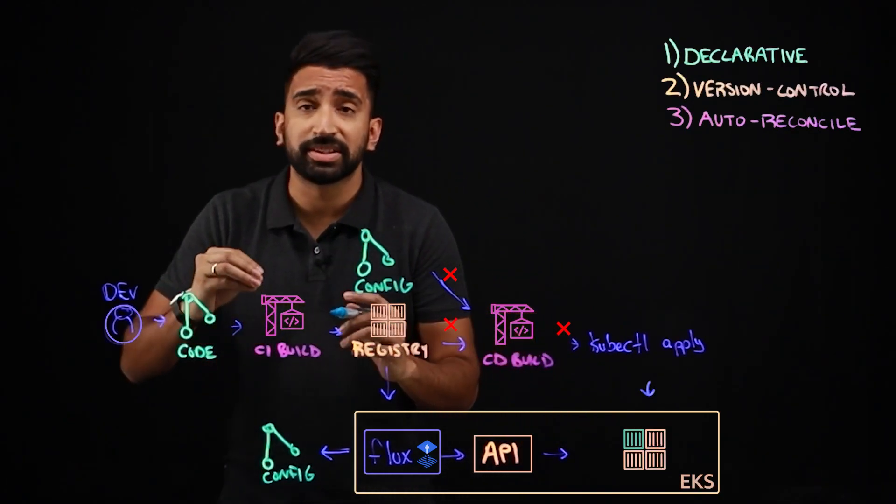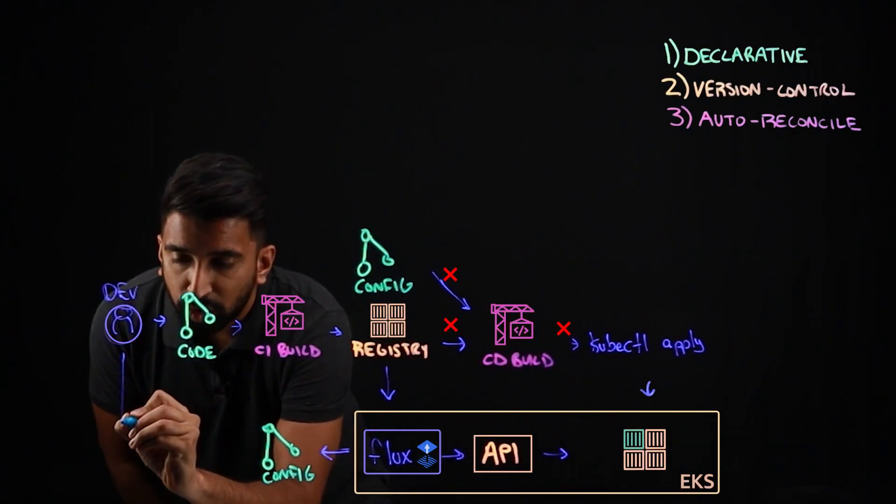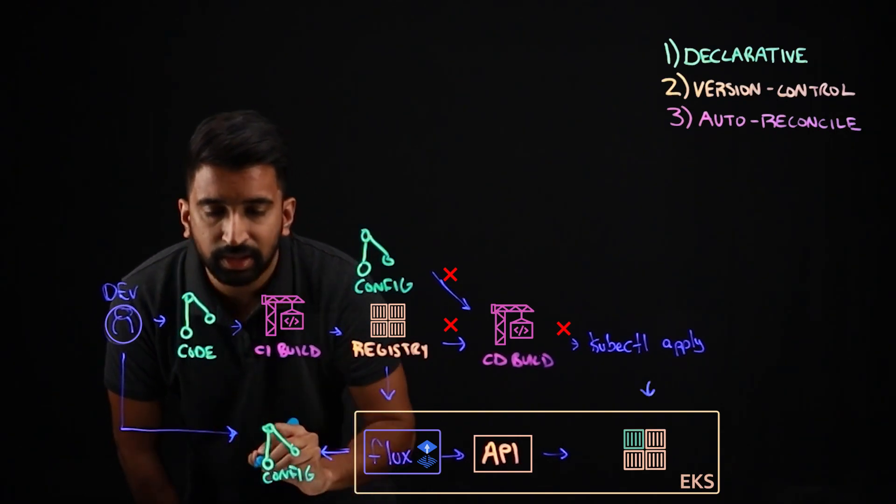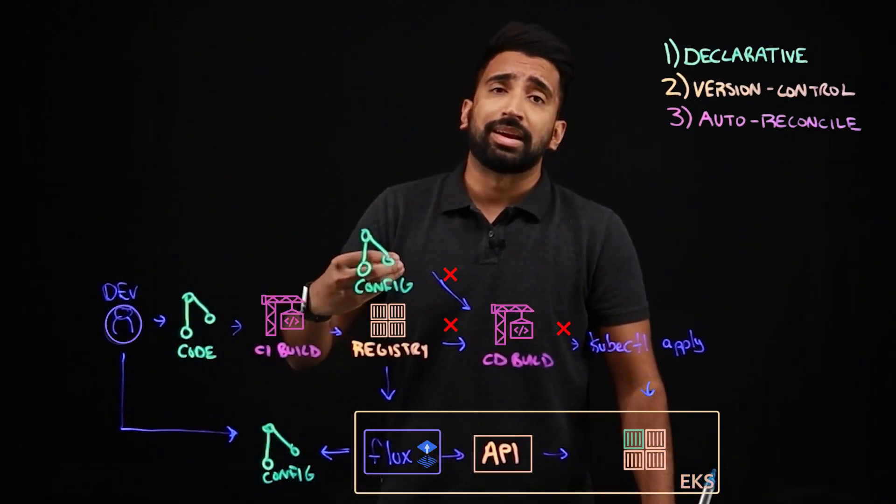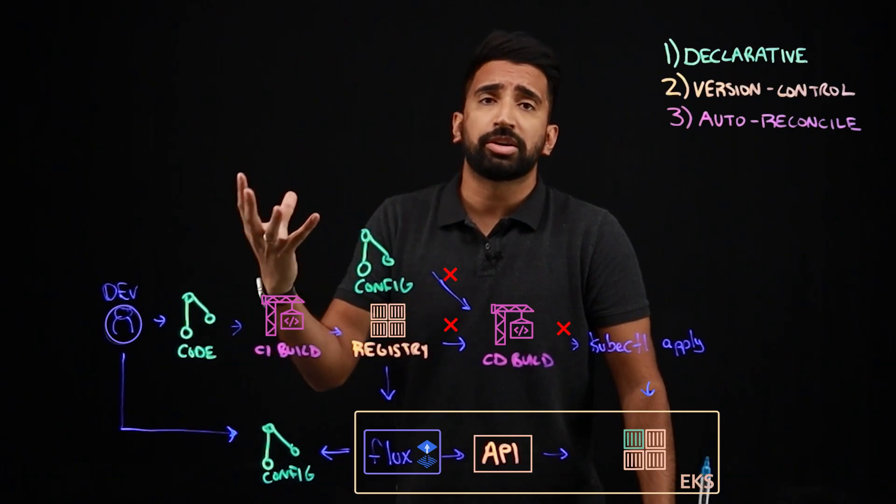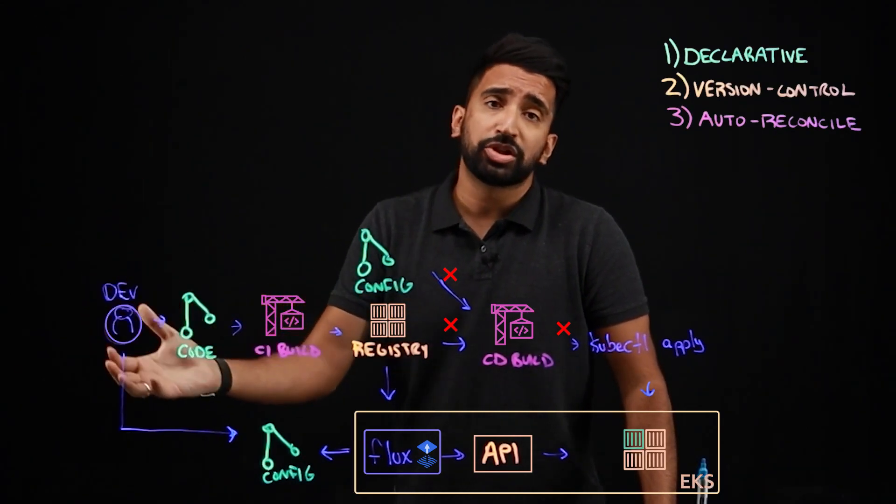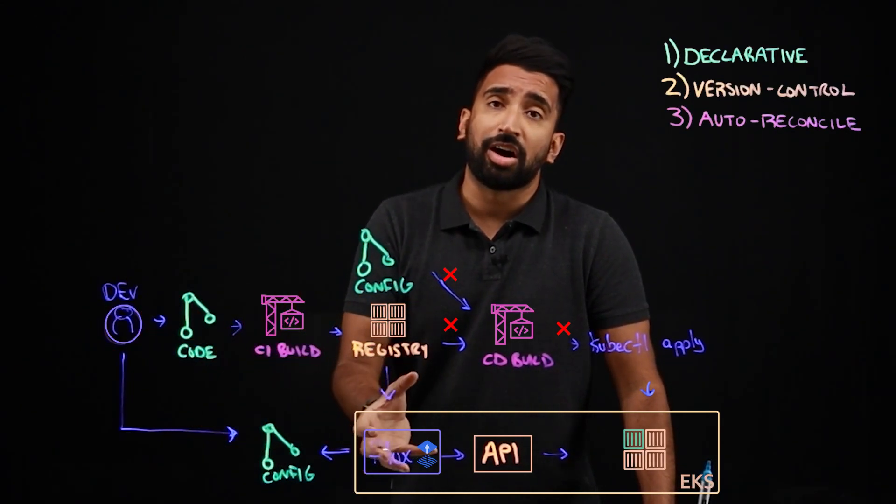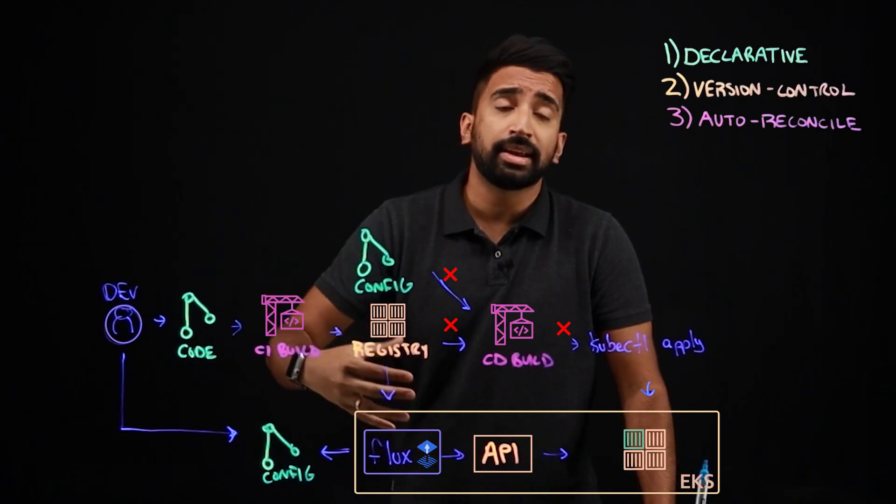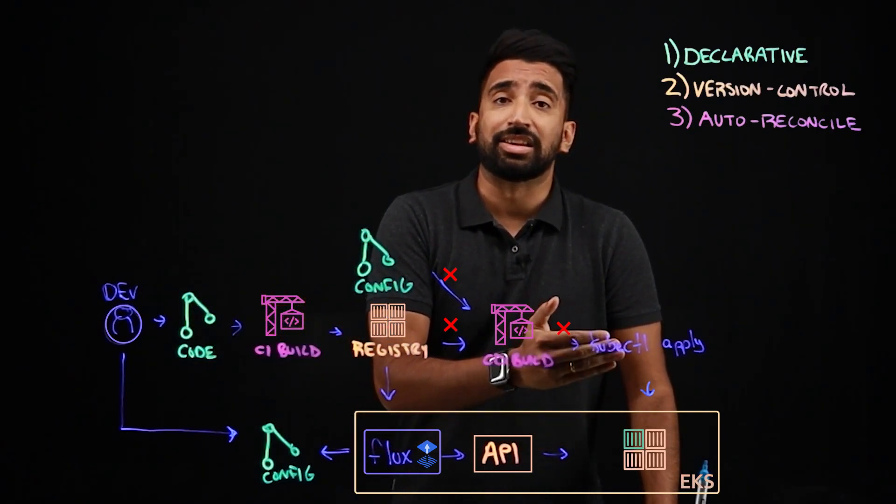Now lastly, as a dev, as a DevOps engineer, I could also work directly with the configuration itself. Let's say I need to work with a new deployment, new service, change the number of replicas, something like that. I can push a change to the config, and that'll kick off Flux to detect that and make the necessary changes in the cluster.